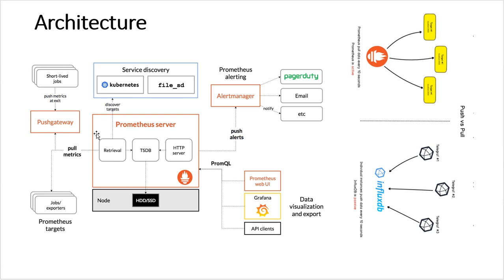Looking at the architecture, Prometheus has a time series database inside it. It collects information from targets — for example, if you want to monitor a hundred servers or applications. If a target doesn't have the pull mechanism, you can apply a push gateway from your end, which will collect and send data to the Prometheus server. This data can also be used with Grafana for dashboards and critical queries. Alert manager handles alerting. Prometheus also has a built-in web GUI, though Grafana is better for monitoring multiple servers.